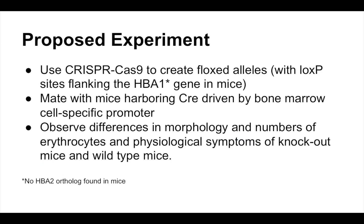For our experiment, we propose to use mouse as a model organism to study the function of the HbA1 gene. We propose to use CRISPR-Cas9 and Cre to knock out the HbA1 gene in bone marrow cells. We will use CRISPR-Cas9 to create floxed alleles with loxP regions flanking the gene on each side. Then we will mate them with mice harboring Cre driven by bone marrow cell-specific promoters. For the progeny of the cross, we can observe the differences in the morphology, number of erythrocytes, and physiological symptoms of knockout mice and compare them with wild-type mice.